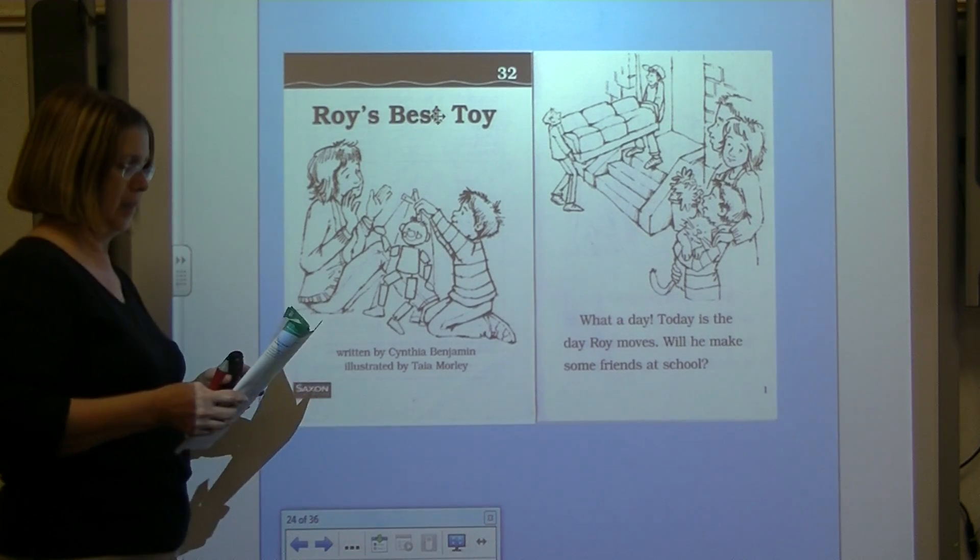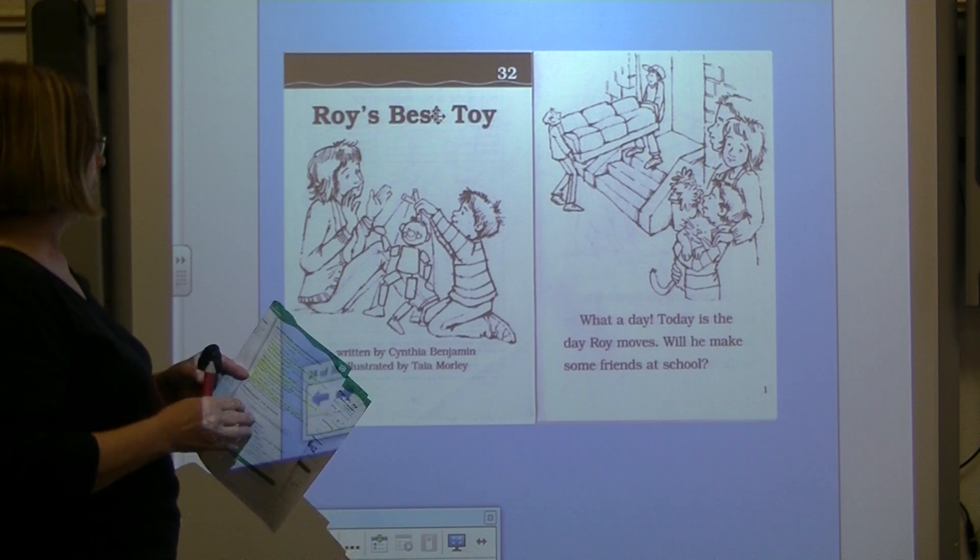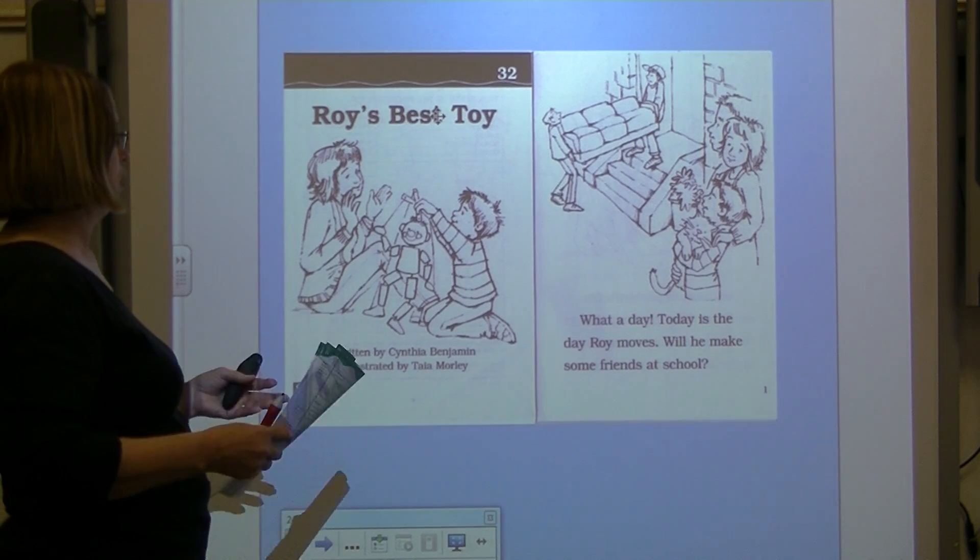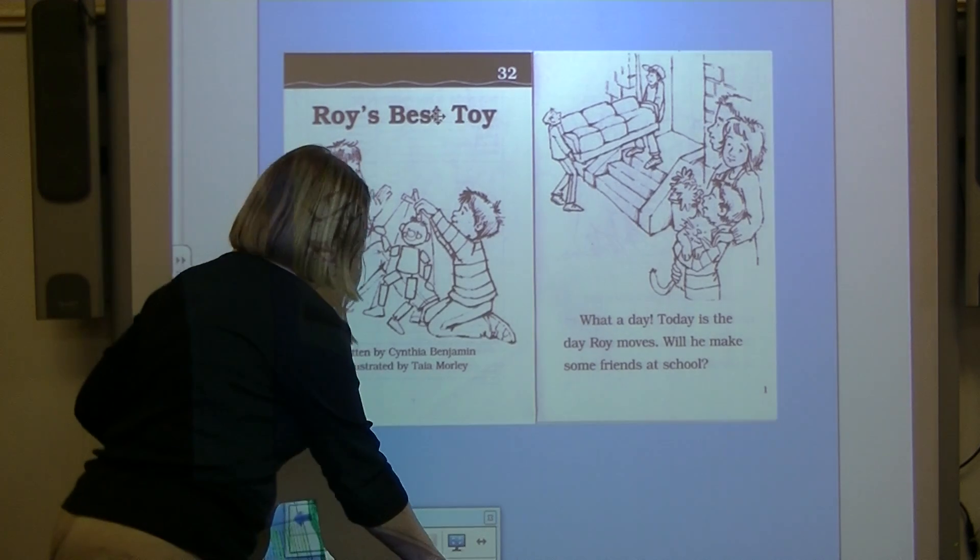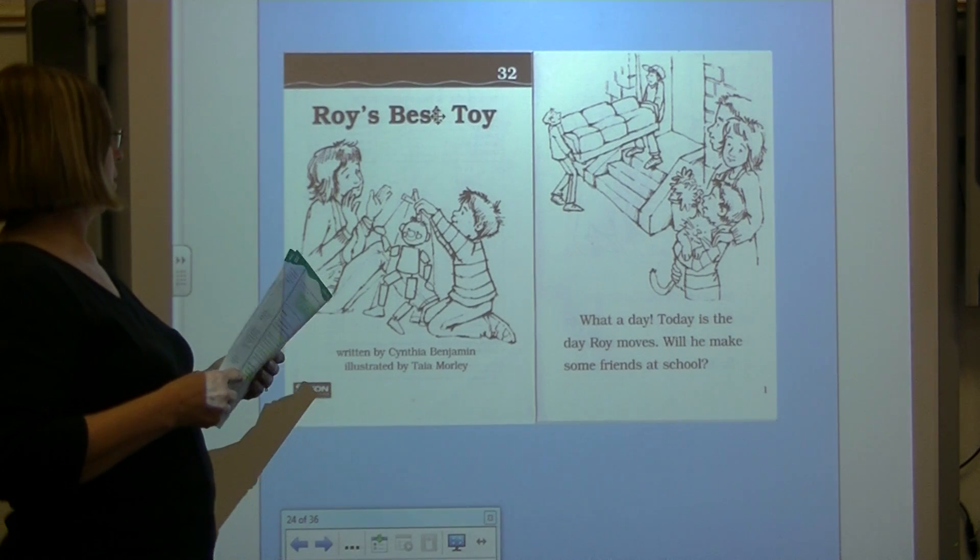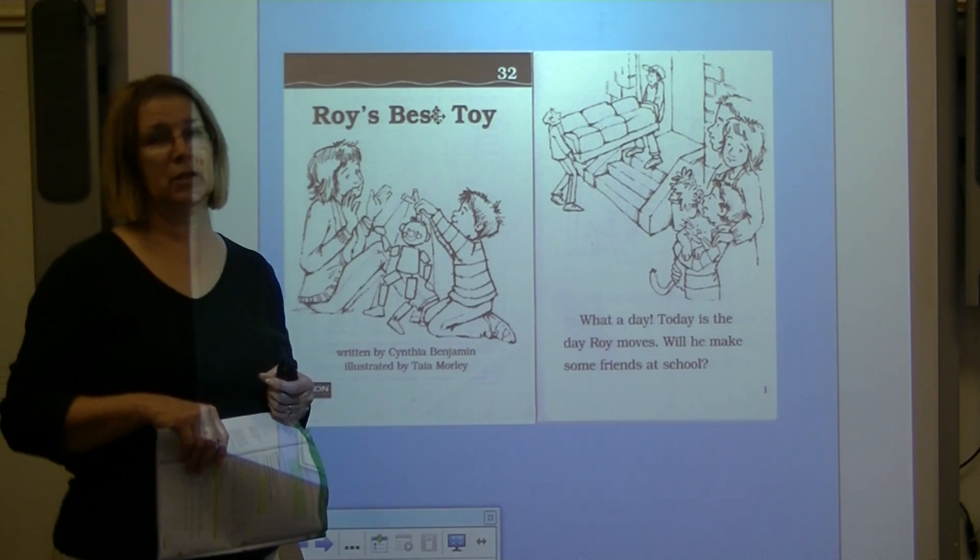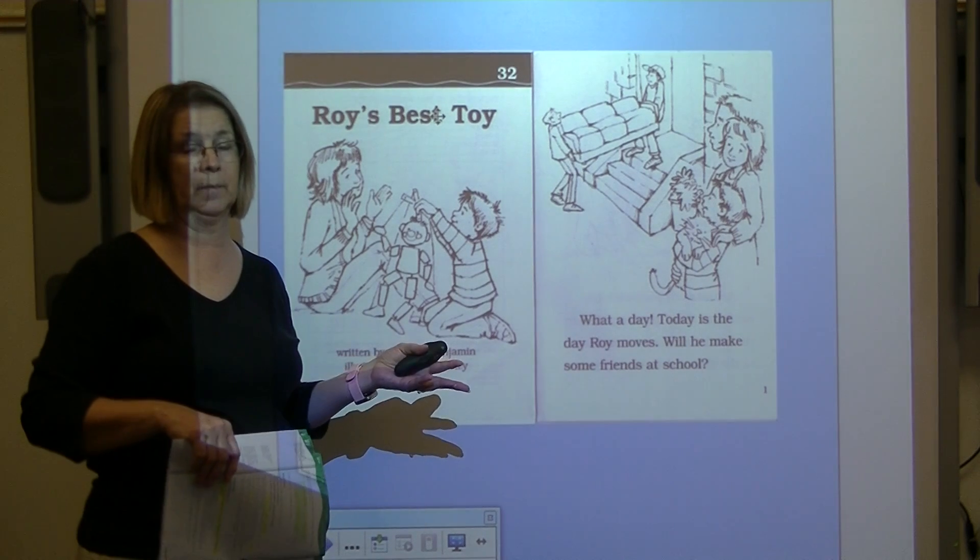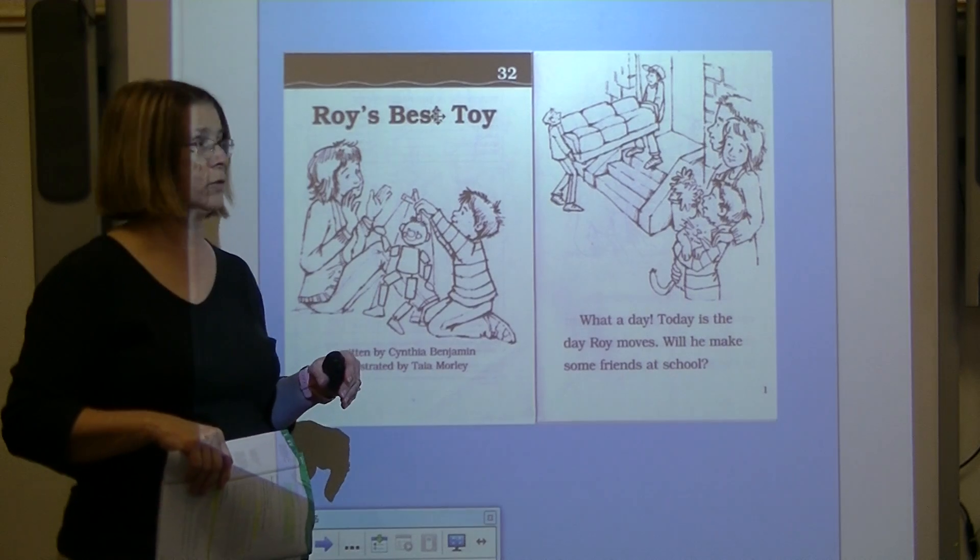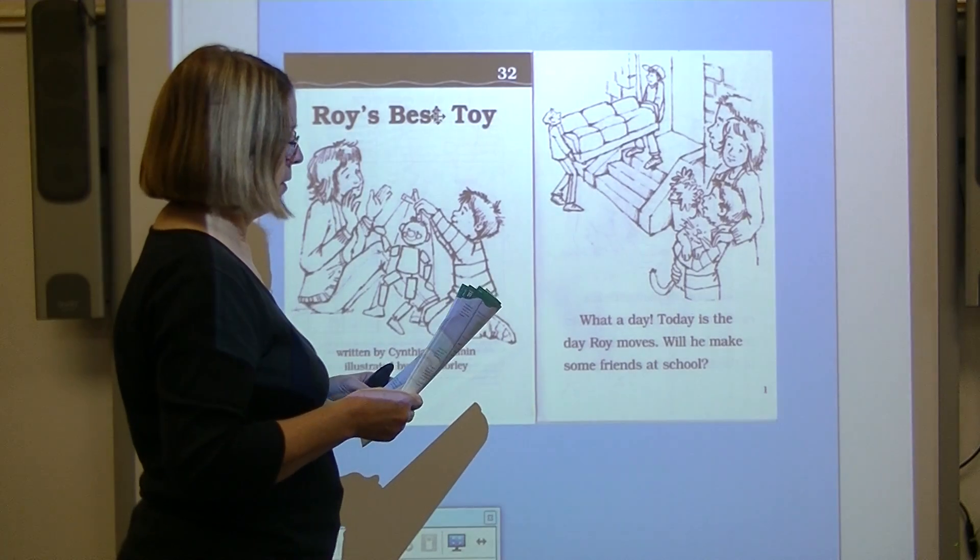Roy's best toy. The author is Cynthia Benjamin. What did the author do? She wrote the story. It is illustrated by Taya Morley. What did Taya Morley do? If she's the illustrator, she did what? She drew the pictures. Let's find out what's happening in this story.